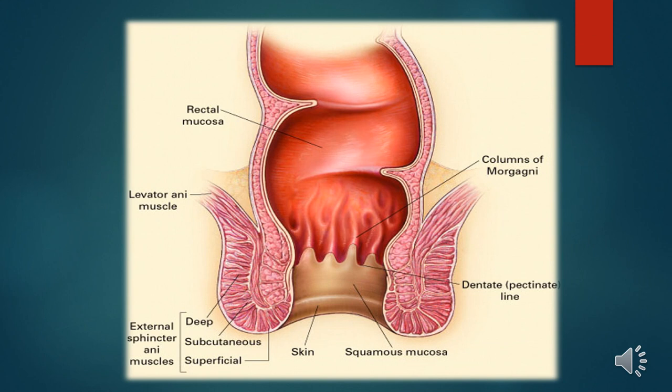The dentate line also helps with the classification of hemorrhoids. Those that are above it are considered to be internal hemorrhoids, and those below it are considered to be external hemorrhoids. We can also see the muscles along the anorectal region — the levator ani muscle and the external sphincter ani muscle, with its deep, subcutaneous, and superficial components.